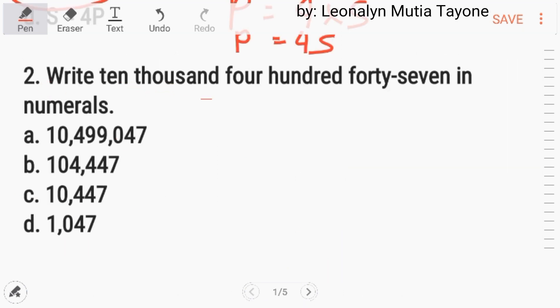Number two, write 10,447 in numerals. Ten thousand four hundred forty seven. Sanjan. Letter C.